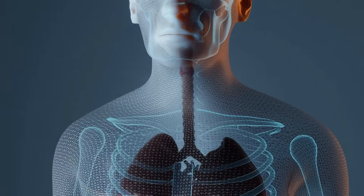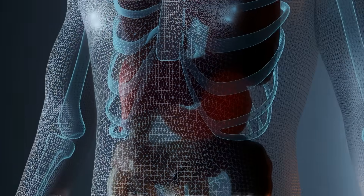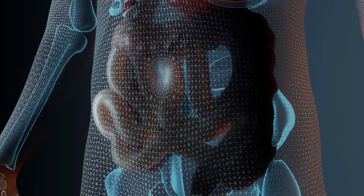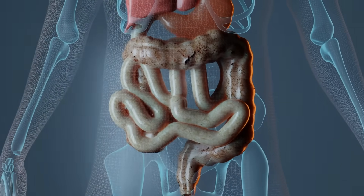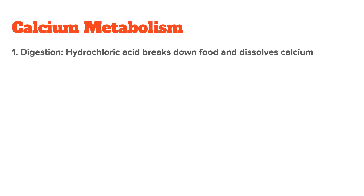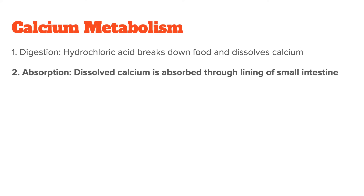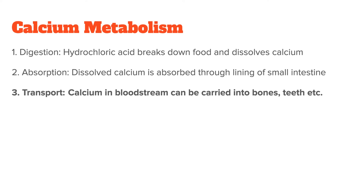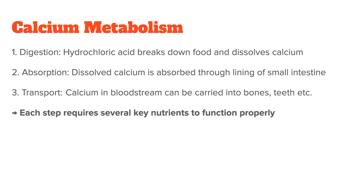To explain what causes calcium buildup, you need to understand what a healthy body does when you consume calcium. Let's assume you eat a dairy product such as cheese, which is fairly high in calcium. What should happen next is that the hydrochloric acid in your stomach breaks down the cheese and dissolves the calcium. This dissolved calcium is then absorbed through the lining of the small intestine into the bloodstream, where it can be carried into the bones, teeth, or wherever your body needs it. For each of these steps — digestion, absorption, and transport — the body needs several key nutrients to function properly.